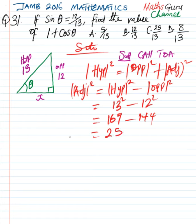So, it means x squared, which is the adjacent squared, is equal to 25. To get the value of x now, we find the square root of both sides. We have square root of x squared and square root of 25. The square root of 25 is 5.